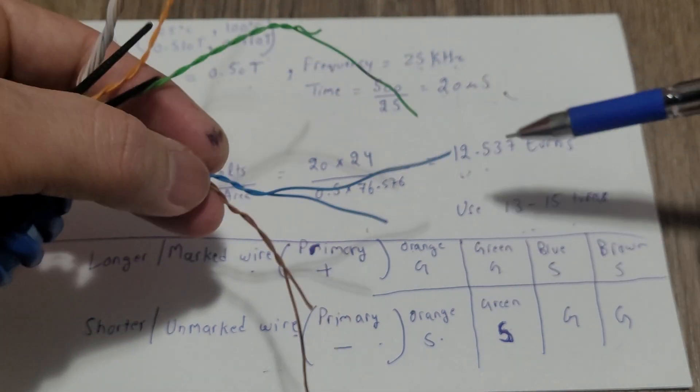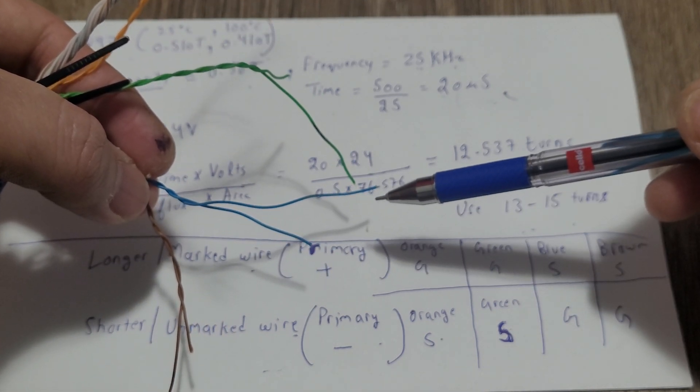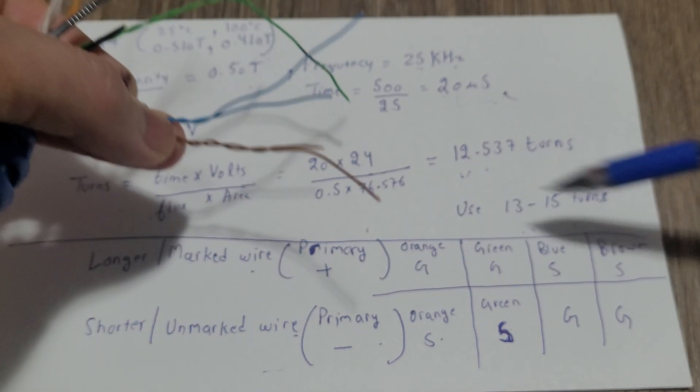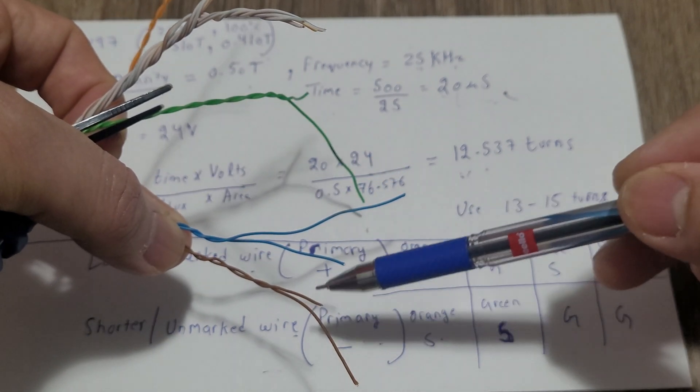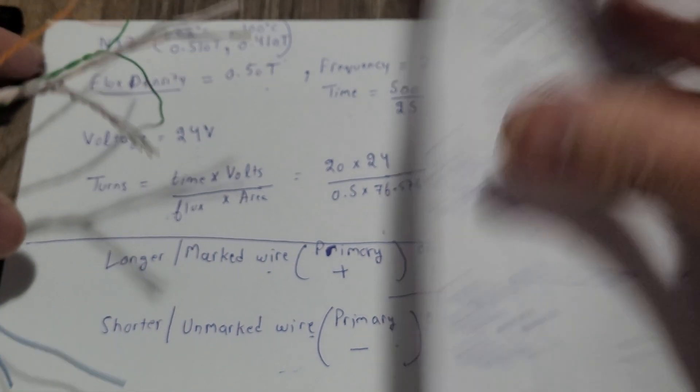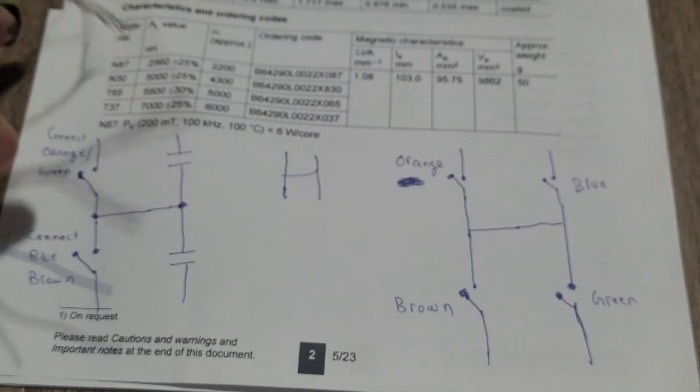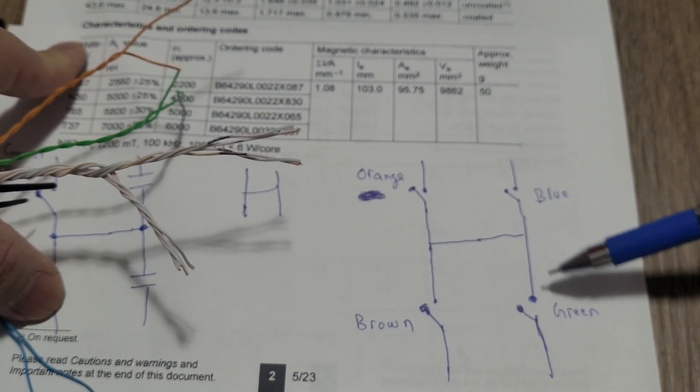And for the blue one, it's gonna be blue and brown is gonna be opposite of orange and green. So blue longer marked wire is source here and same for brown source. And the shorter ones are gate here.